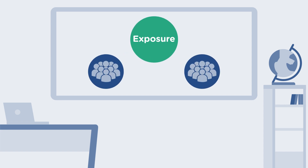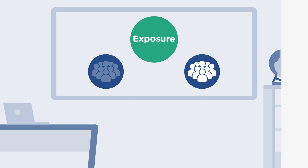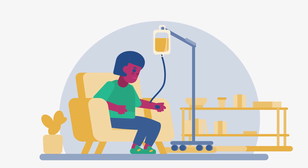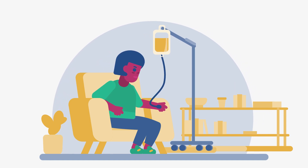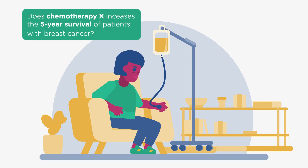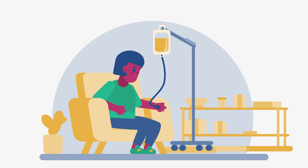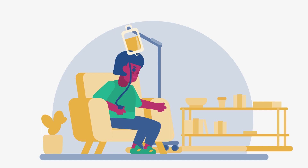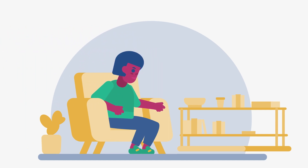We can do that by comparing two groups — one with exposure and one without the exposure. Let's apply this to the first research question we introduced about the effectiveness of chemotherapy X. We want to find out if chemotherapy X increases the 5-year survival rate of patients with breast cancer. In our design, we will compare a group that is exposed to the therapy to one that is not exposed because they are not treated.